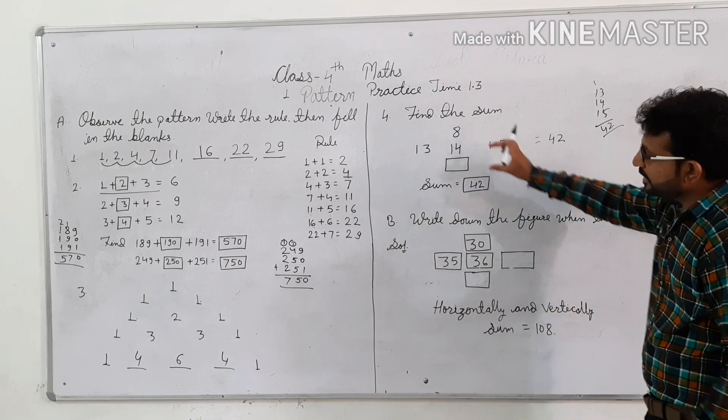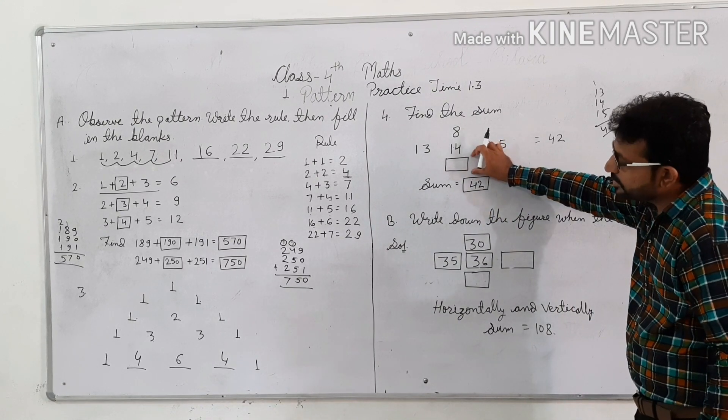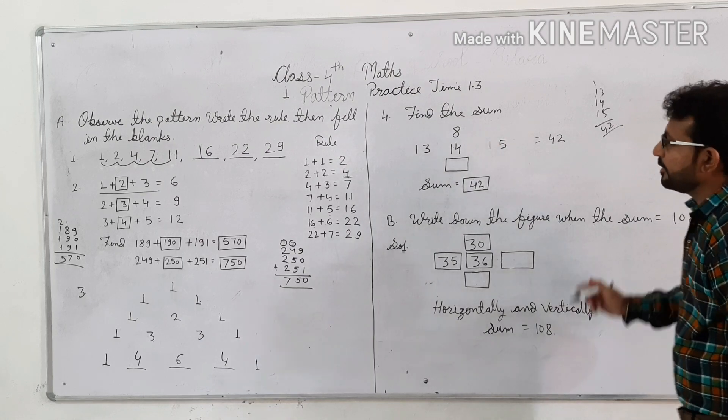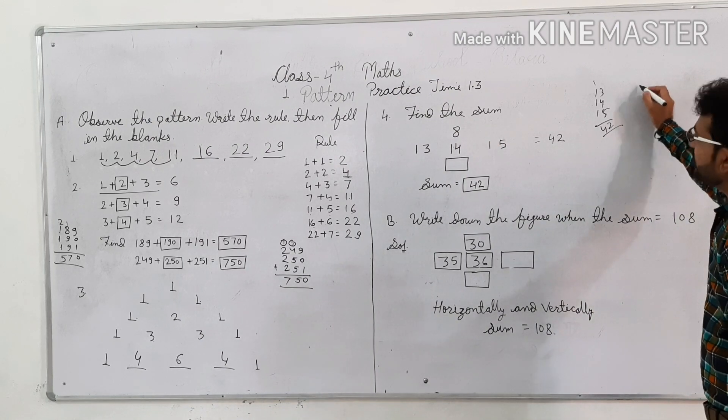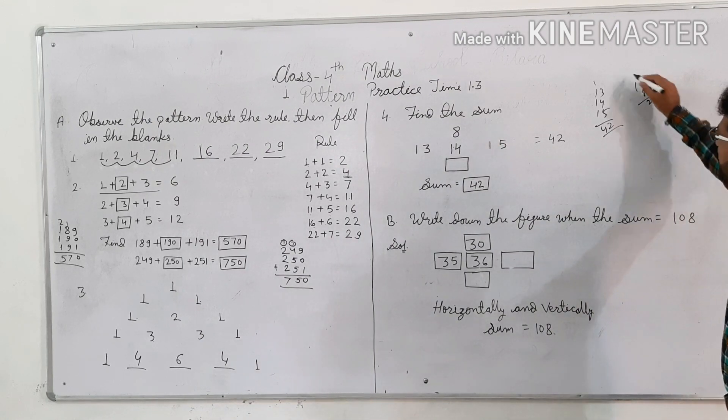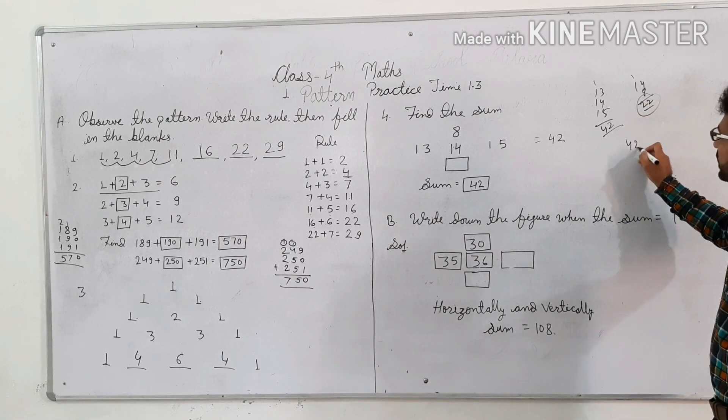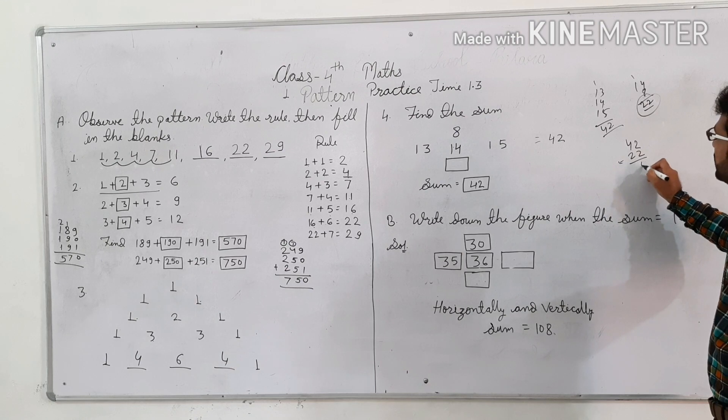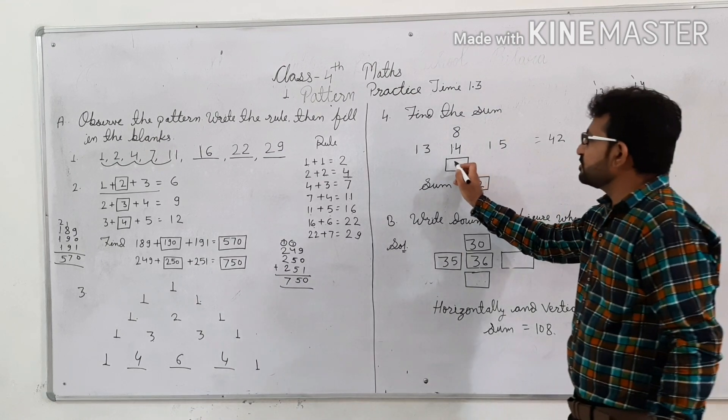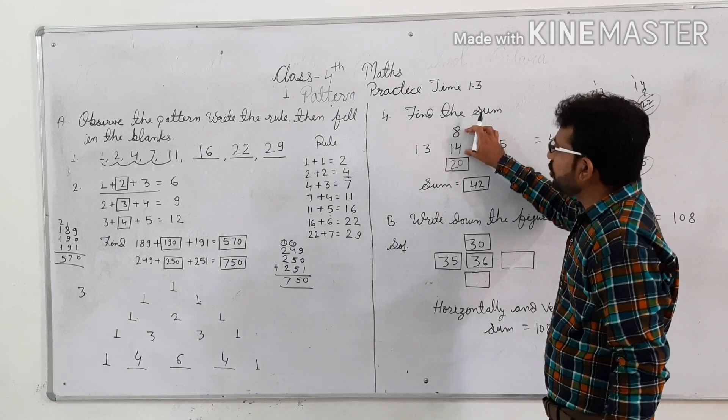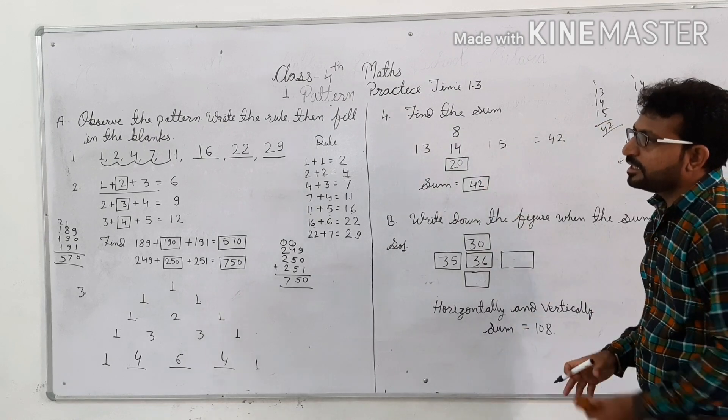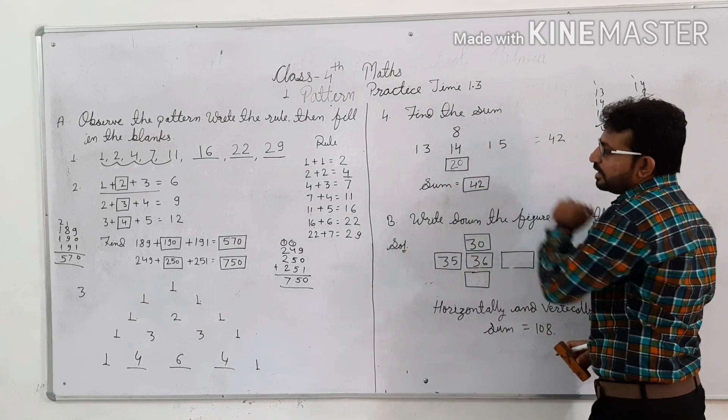Now we have to say vertical. If we have to plus, then 42 minus 22 is our answer. So what is our answer? 20.